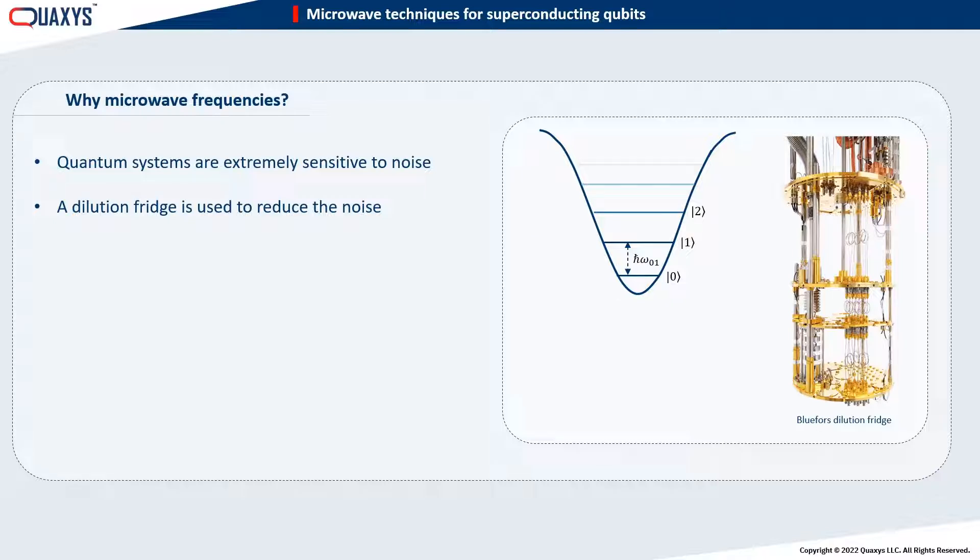Suppose the distance between the two energy levels is not large enough. In this case, the thermal energy inside the fridge can bring the qubit from the ground state corresponding to zero to the first excited state corresponding to one. Since we want external control over the qubit, this thermal transition is undesired. Therefore, we need to tune this frequency to suppress transitions due to thermal energy.